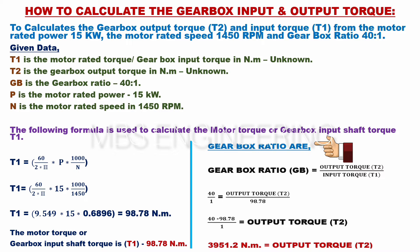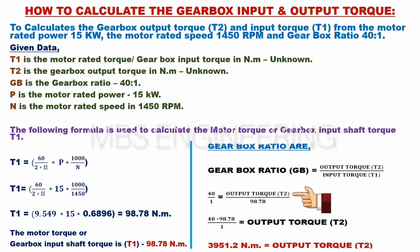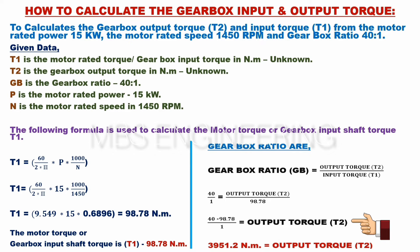Using the gearbox ratio formula: Gearbox ratio GB equals output torque T2 divided by input torque T1. Applying the given data: 40/1 = T2 ÷ 98.78. Therefore, output torque T2 = 40 × 98.78 ÷ 1. The gearbox output torque T2 is 3951.2 newton meters.